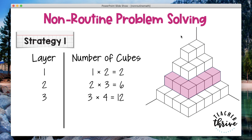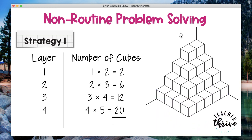Layer three: three times four equals 12, so there are 12 cubes in that layer. Layer four, students would use the dimensions of that layer to find that there are 20. Adding up all of the cubes in each layer, they would know that the entire arrangement has 40 cubic units.